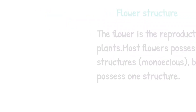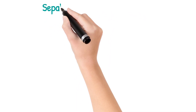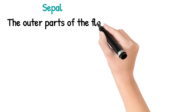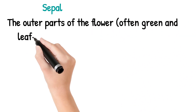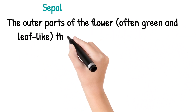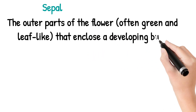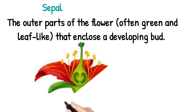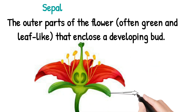Now we are going to describe some of the parts of the flower and their functions. Let's start with the sepal. The outer part of the flower is called the sepal. Often it is green in color and also has a leaf-like structure that encloses a developing bud. You can see the picture — the sepal is green in color and is a leaf-like structure.